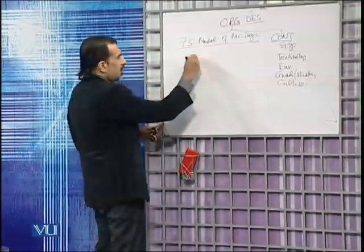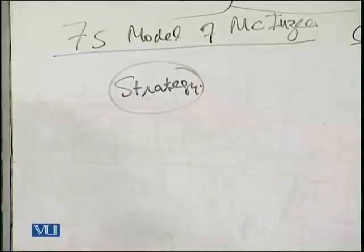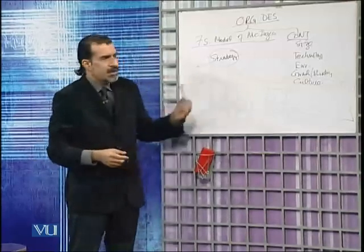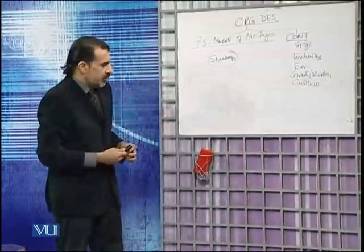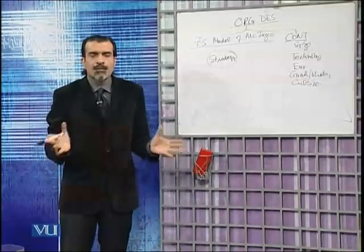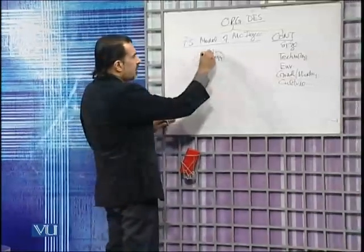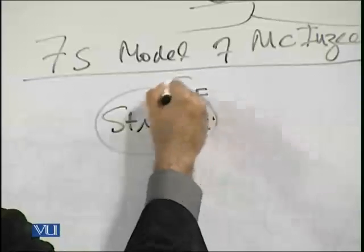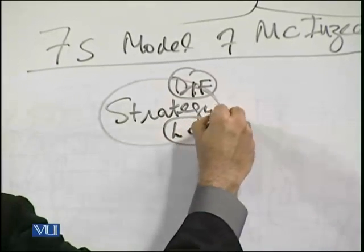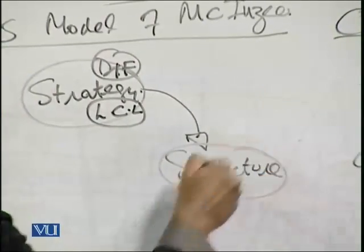We start our analysis of any company with a strategy. We have two broad strategies that are key opposites: differentiation (DIF) and low cost leadership (LCL). Strategy leads to a structure. If the strategy is differentiation, the structure will be flat. If the strategy is low cost leadership, the structure will be tall and bureaucratic, because vertical hierarchy is greater in that case and horizontal activity is greater in the differentiation case. So the structure will differ depending on the strategies.